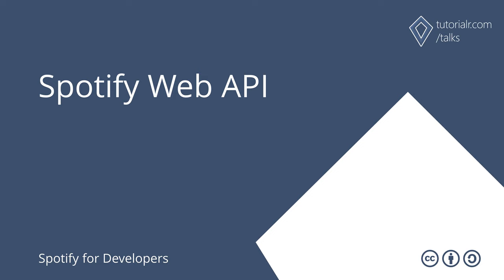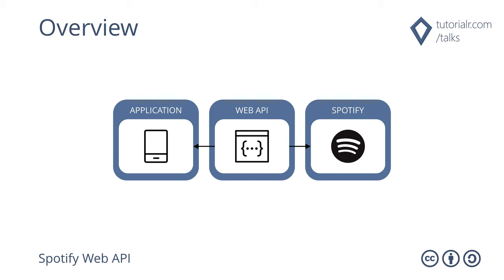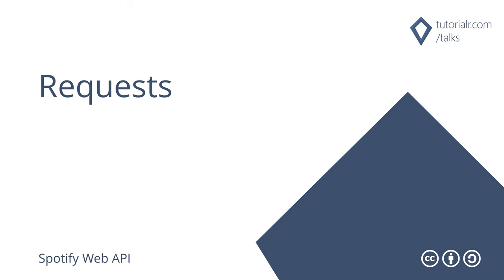Spotify Web API allows applications to retrieve Spotify content such as album data, playlists and more. Spotify Web API endpoints are based on simple REST principles and return JSON metadata about artists, albums, tracks and more. It also provides access to user-related data like playlists and music the user saves in their library. Requests are performed using standard HTTPS requests in UTF-8 format to an API endpoint and where possible use the appropriate HTTP verbs for each action.